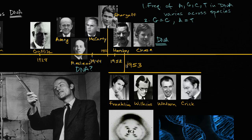So we get to the early 1950s. We had all of this evidence that DNA is the molecular basis. You have Chargoff's rules. And then you have Rosalind Franklin, who is imaging diffraction patterns from X-rays beamed into crystals of DNA.